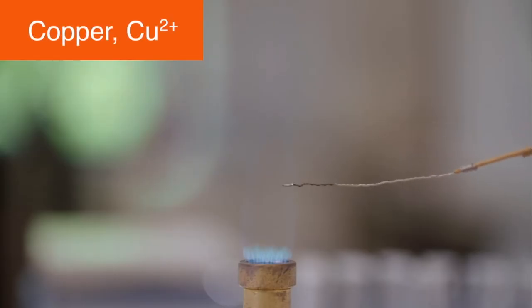Copper compounds can produce either a green or blue green colour in the flame depending on the anion present. For example, copper halides produce blue green colours, whereas copper non-halides produce a green colour.